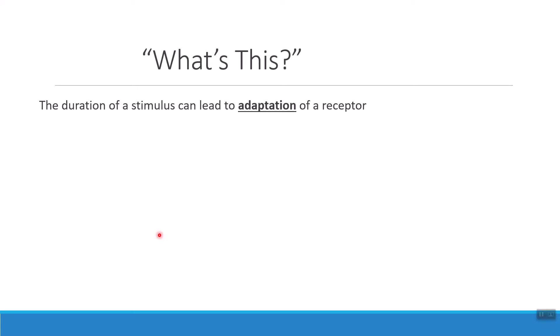We can also detect what's going on with stimuli based on a process of something called adaptation. And when I talk about a receptor undergoing adaptation, what I'm meaning is that it's going to no longer respond to the stimulus that it first was responding to.